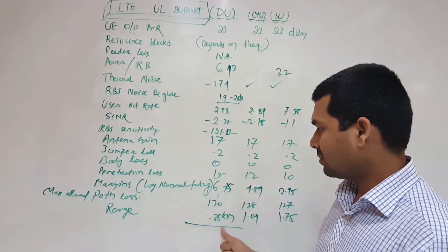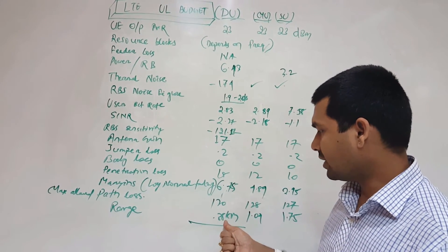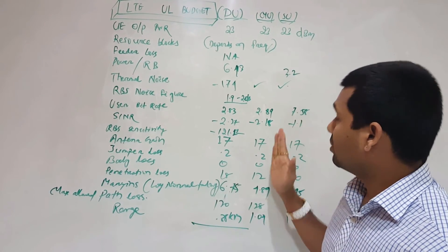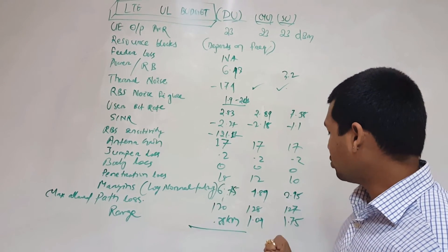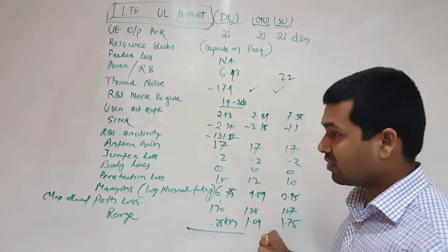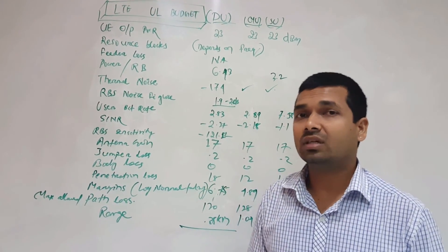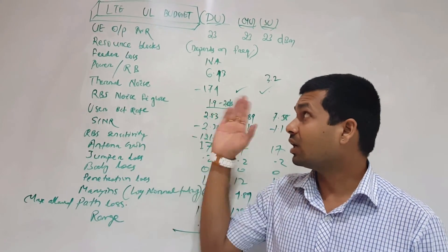The range of the cell would be 0.38 kilometers or 1.04 kilometers for medium urban, and for suburban it would be 1.75 kilometers. That's all about the uplink budget.